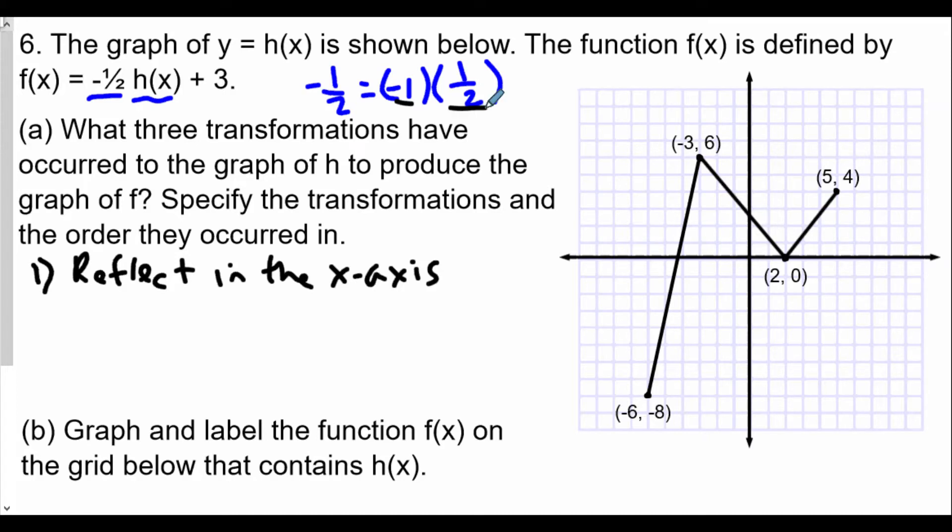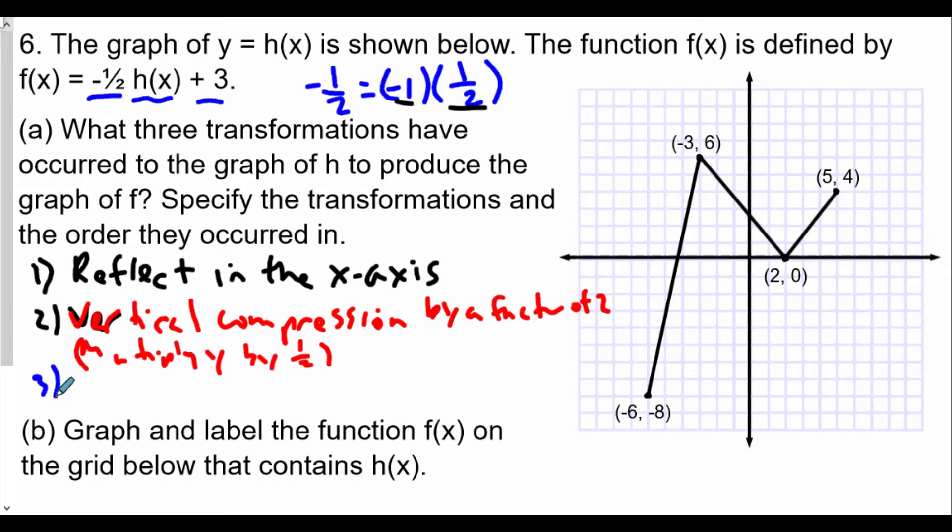Now for the 1 half. The 1 half multiplying is going to be a vertical compression by a factor of 2, or multiply y by 1 half, which we'll see later on in our transformations. And finally, for the third part, plus 3, this will be our third transformation, a vertical shift up by 3.